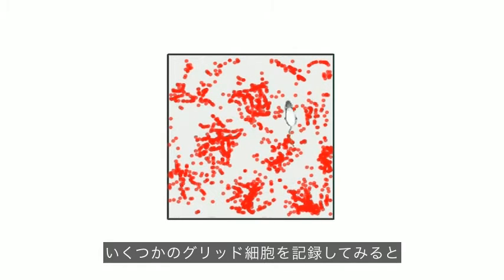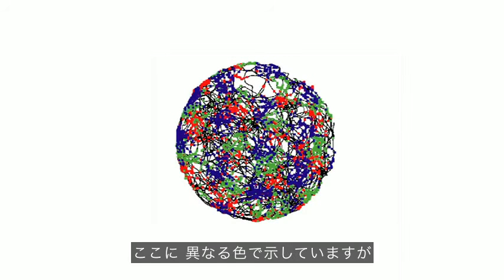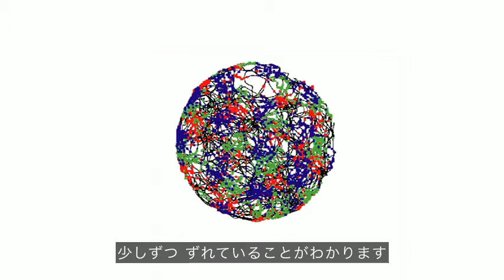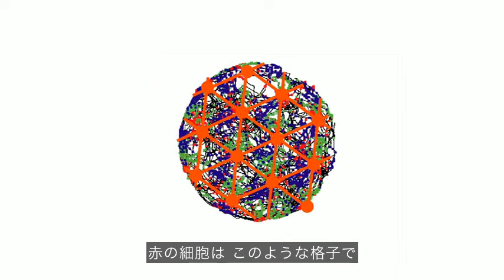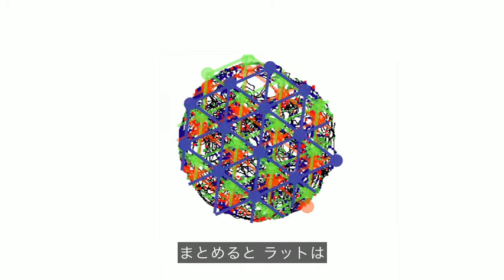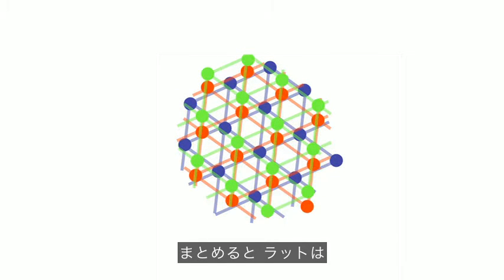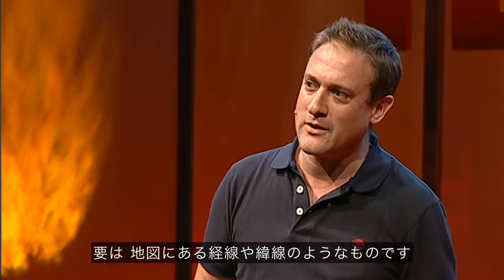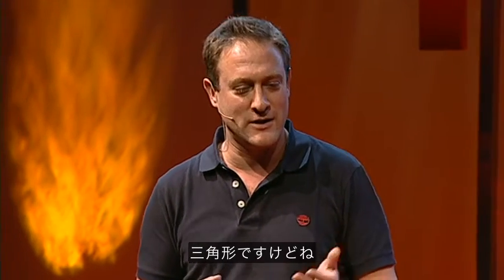And if you record from several grid cells shown here in different colours, each one has a grid-like firing pattern across the environment and each cell's grid-like firing pattern is shifted slightly relative to the other cells. So the red one fires on this grid and the green one on this one and the blue one on this one, so together it's as if the rat can put a virtual grid of firing locations across its environment, a bit like the latitude and longitude lines that you'd find on a map but using triangles.